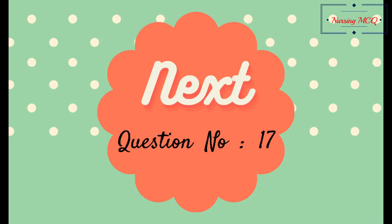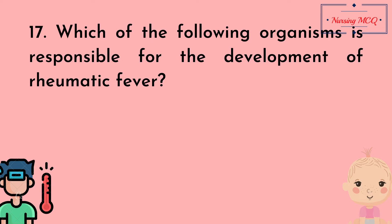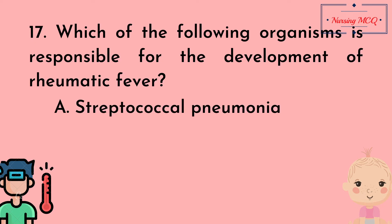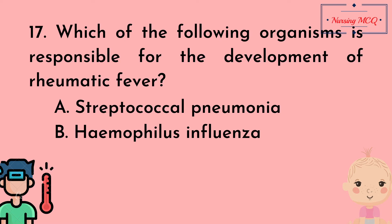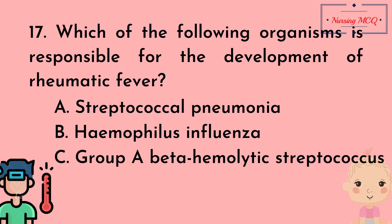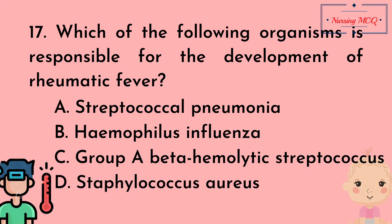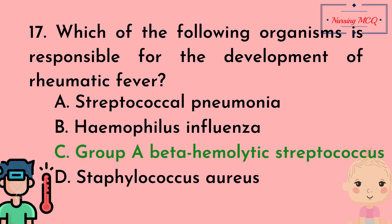Question number 17. Which of the following organisms is responsible for the development of rheumatic fever? Option A, Streptococcal pneumonia; Option B, Haemophilus influenzae; Option C, Group A beta-hemolytic streptococcus; Option D, Staphylococcus aureus. The right answer is Option C: Group A beta-hemolytic streptococcus.